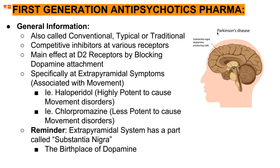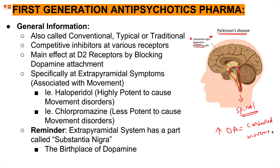To understand extrapyramidal symptoms, let's revisit the diagram. The blue dot represents the substantia nigra, a dopamine-producing cell of the body and a member of the extrapyramidal pathways, which also include the spinal cord. When dopamine is created at the substantia nigra, we have controlled movements of the body. However, when antipsychotics block substantia nigra's dopamine synthesis, dopamine is reduced and uncontrolled movements result.